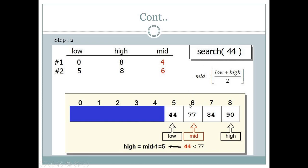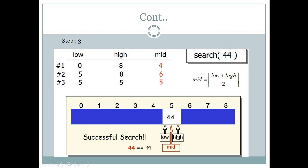At index 6 we check whether our desired value 44 is present, but 77 is there instead. Our desired value 44 is less than the mid value 77, so we set high equal to mid minus 1. Our mid is 6, so high becomes 5. Now low is 5 and high is 5, and the new mid is low plus high divided by 2: 5 plus 5 is 10, divided by 2 gives mid equal to 5.